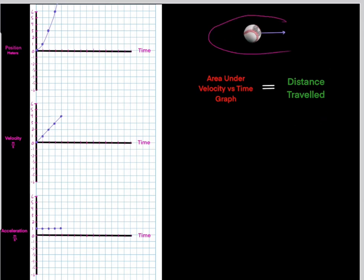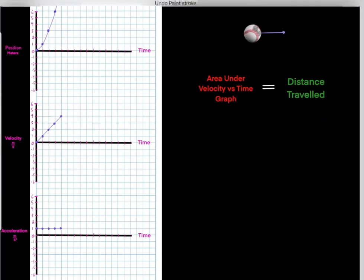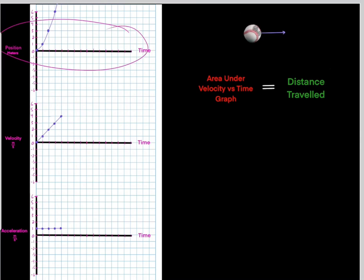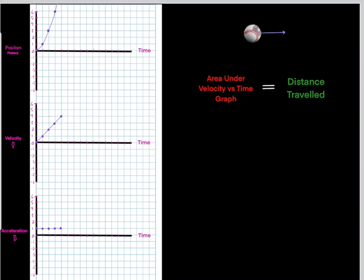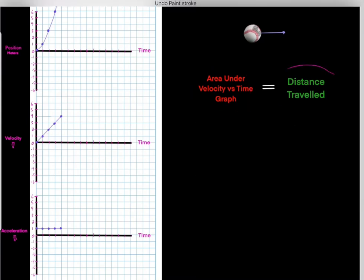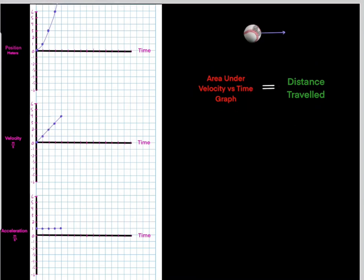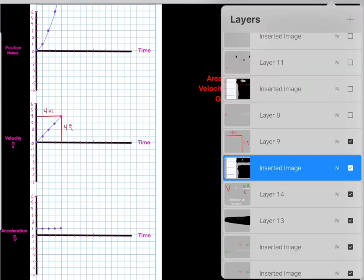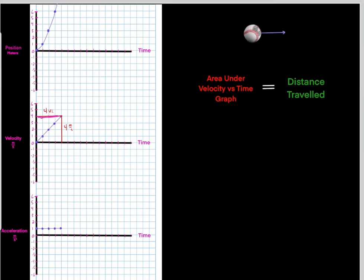Let's try another example. We have a ball with a certain motion represented by a position versus time graph. We convert that to a velocity versus time graph. We see this is 4 meters per second and this is 4 seconds, so this would have an area of 16, because 4 times 4 is 16. However, it's the area under this curve — so the area under the curve would just be half of that region.